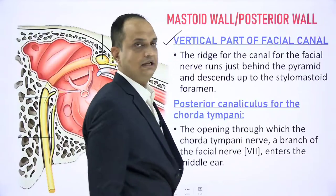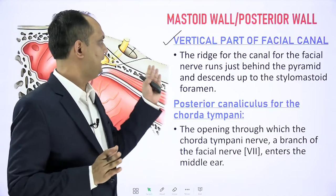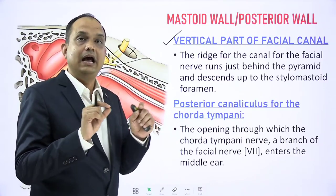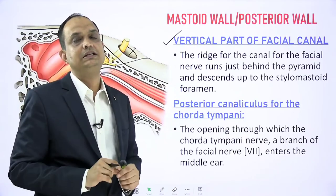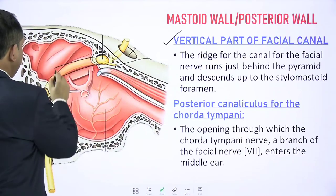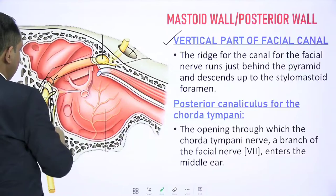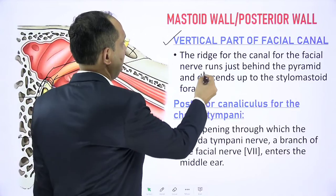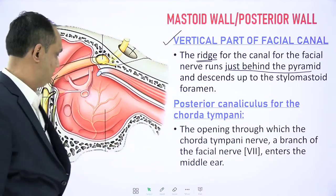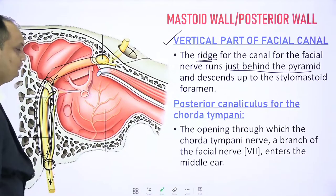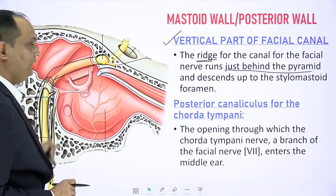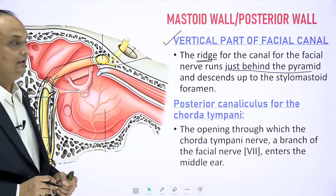Another feature on the posterior wall is the vertical part of the facial canal. The facial nerve enters the temporal bone through the internal acoustic meatus and has a horizontal and a vertical part within bony canals called the fallopian canal. The vertical part of this fallopian canal is related to the posterior wall of the middle ear cavity. The ridge for the canal for the facial nerve runs just behind the pyramid and descends to the stylomastoid foramen, through which the facial nerve finally exits the skull.